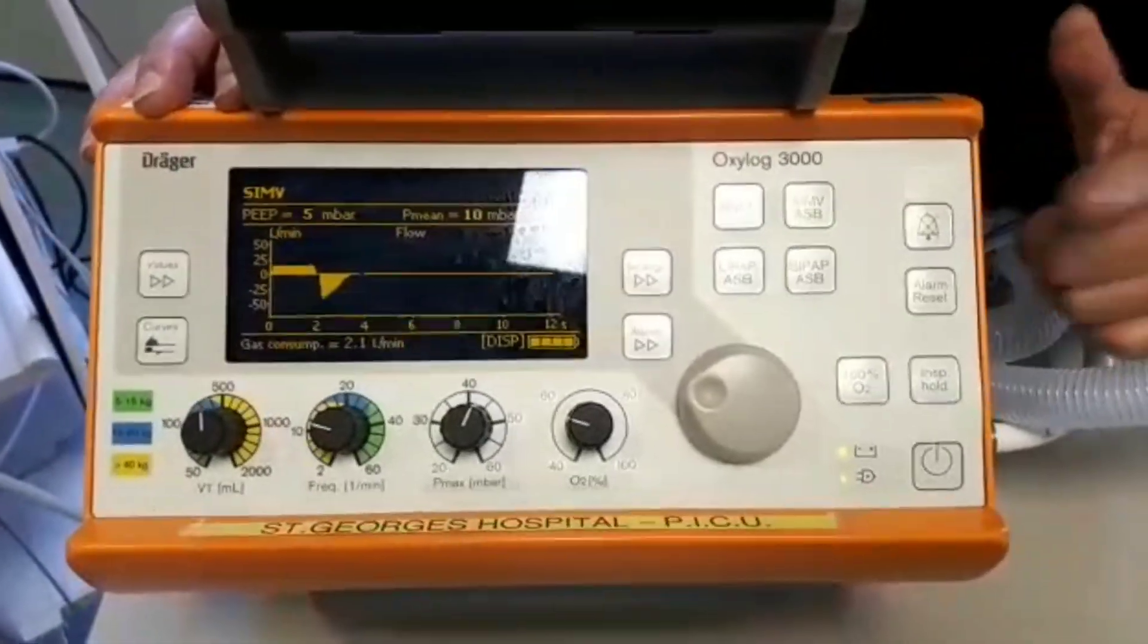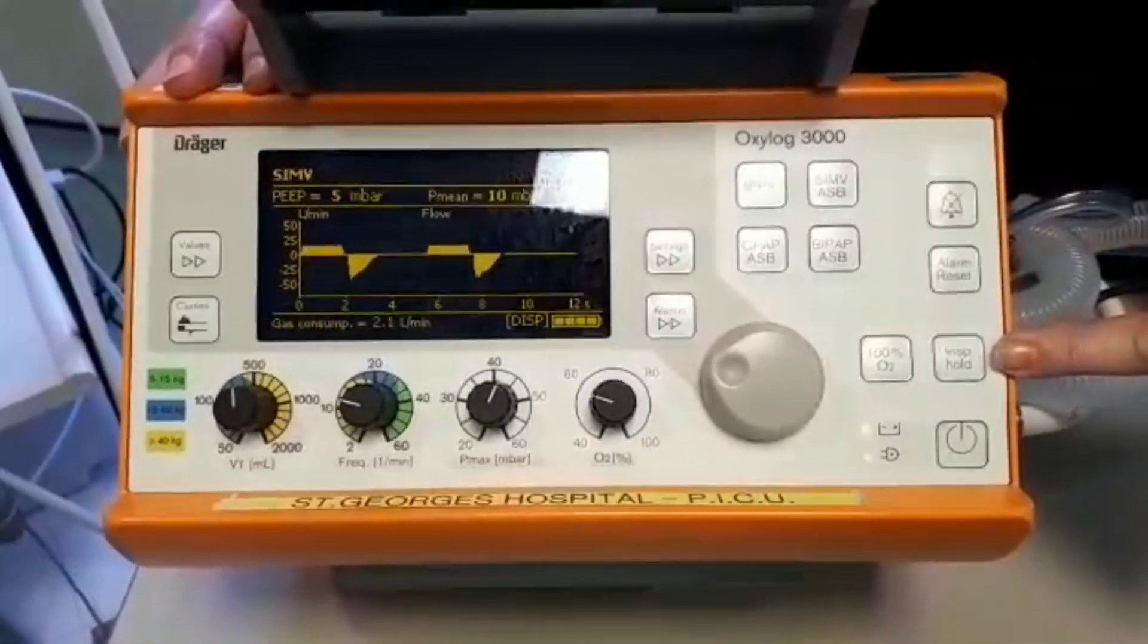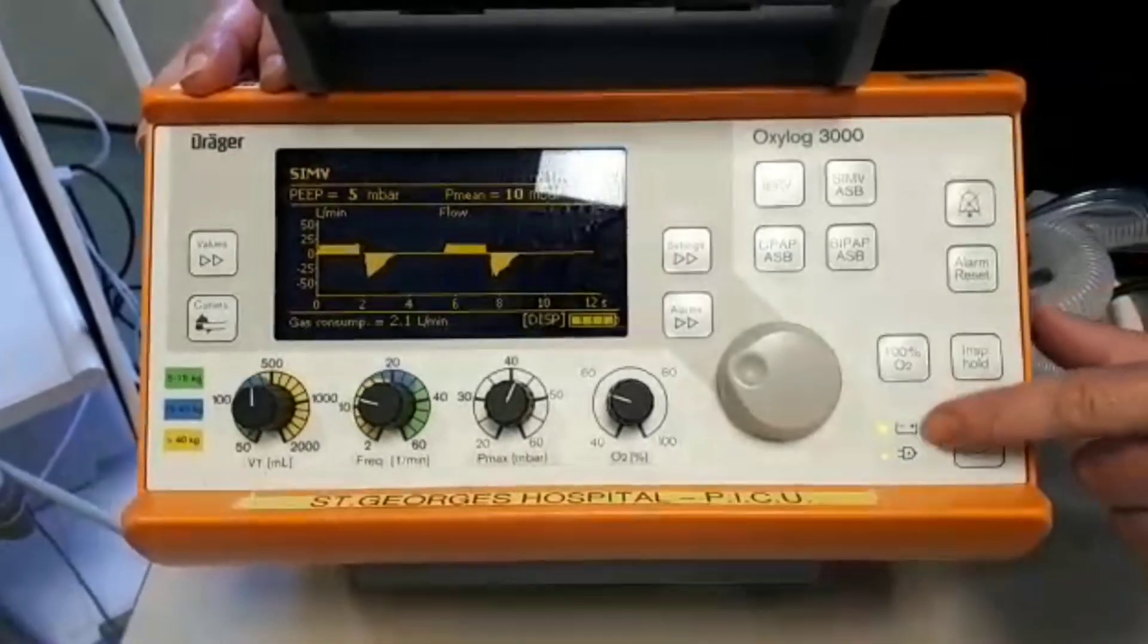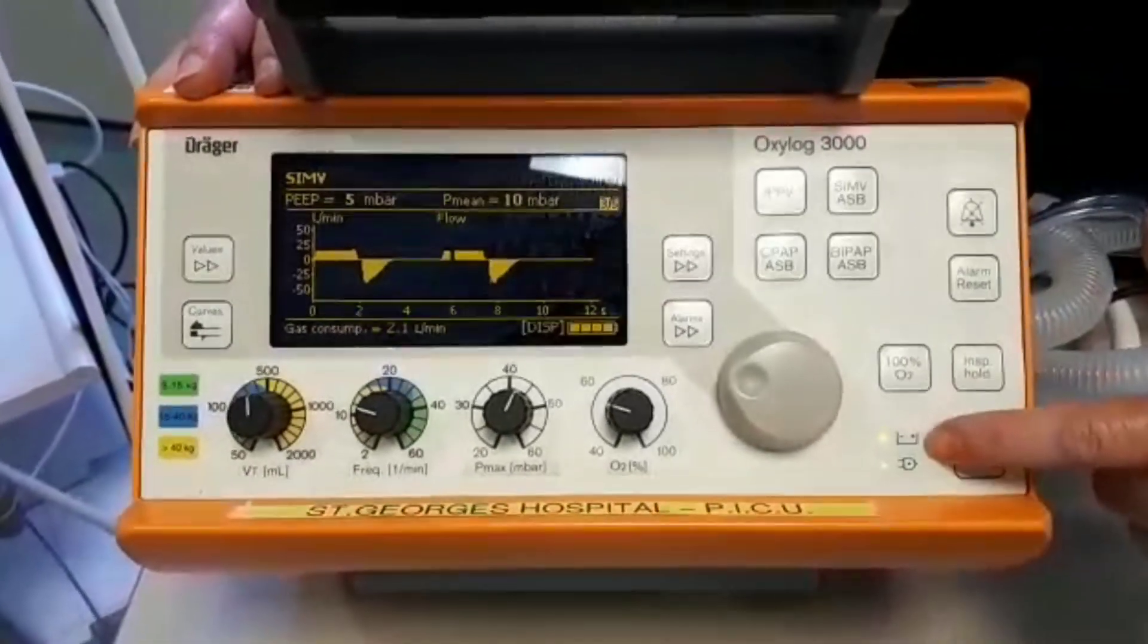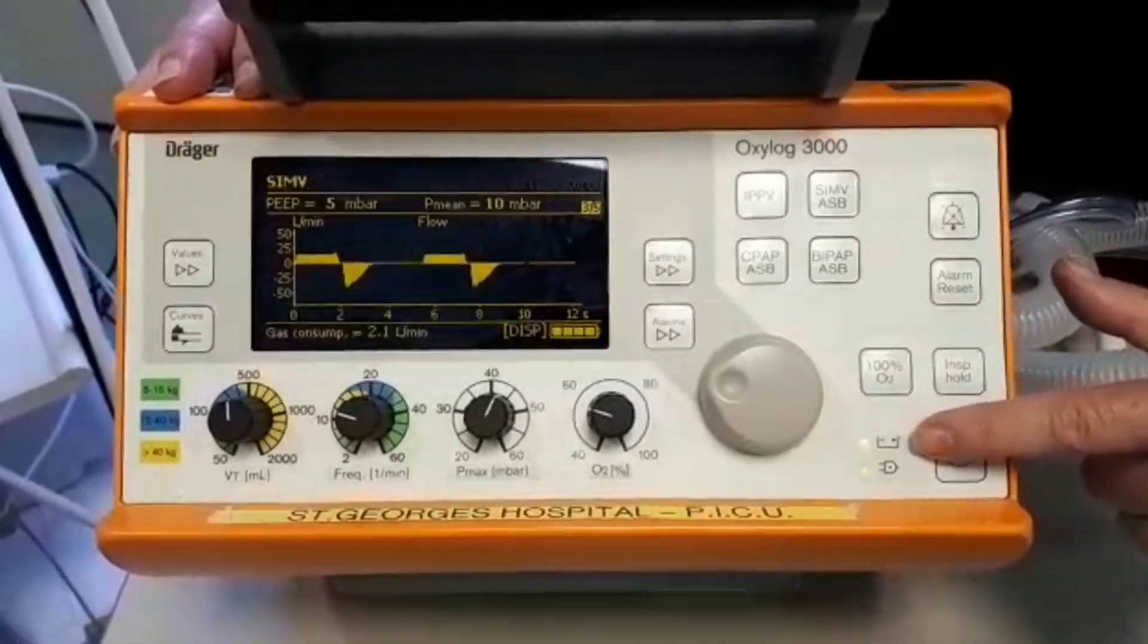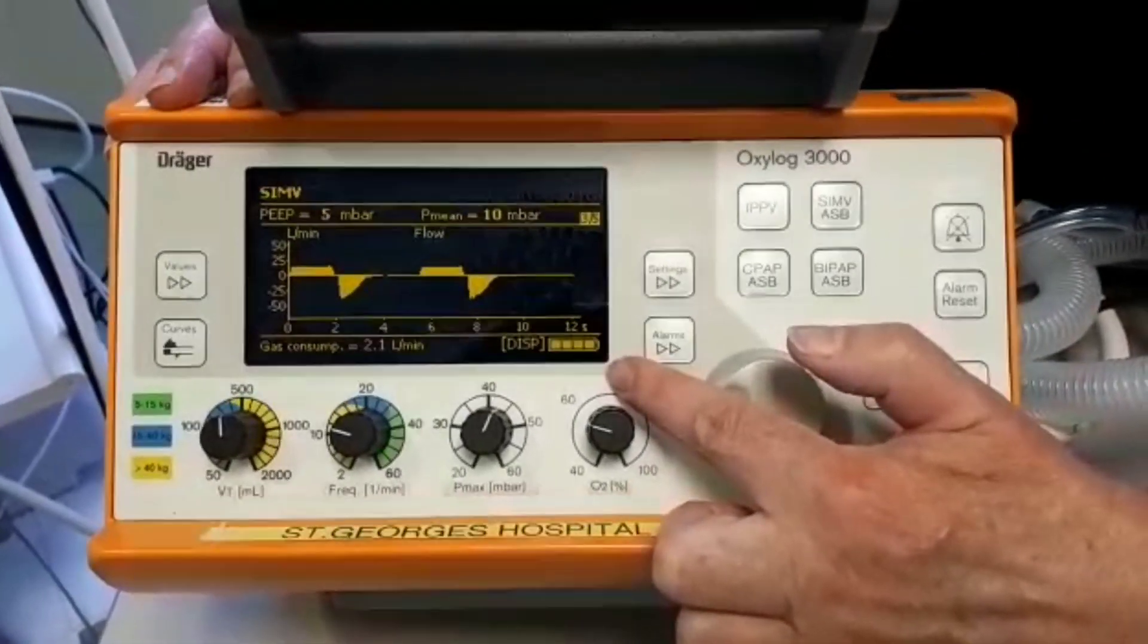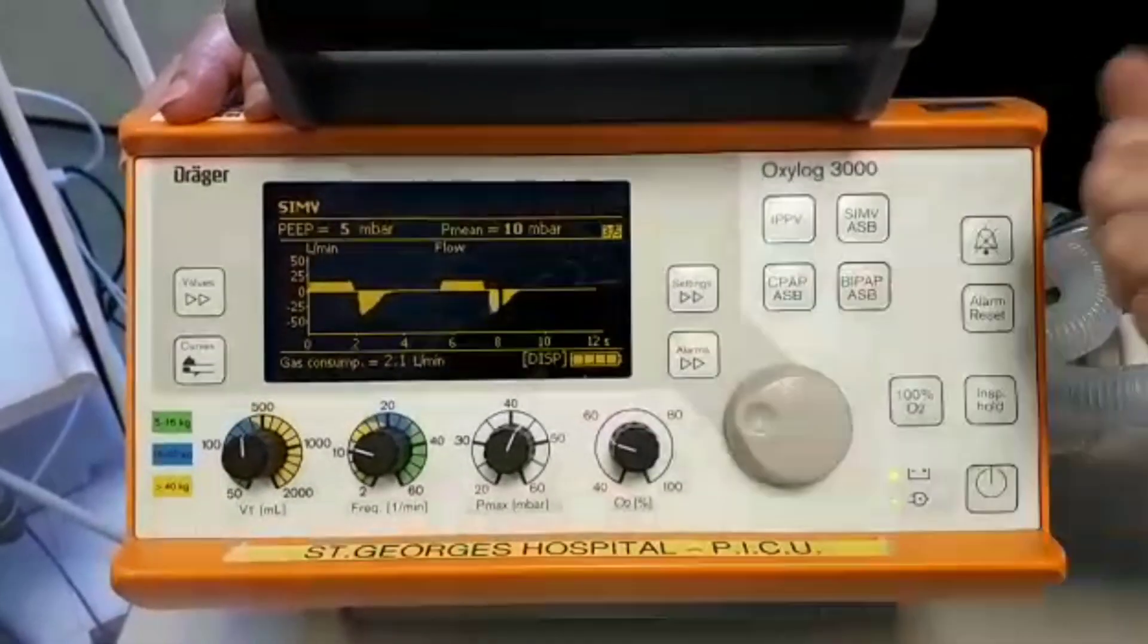Over here we have our alarm silence, our alarm reset, inspiratory hold, and a hundred percent oxygen. We also have down here our mains and battery indicator. As you can see, they're both green, it's connected to AC mains, and the battery is fully charged. We also have a further battery indication at the bottom of the screen with the battery display showing the charge there.